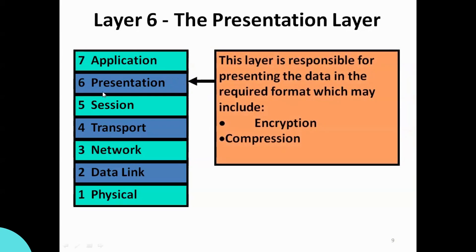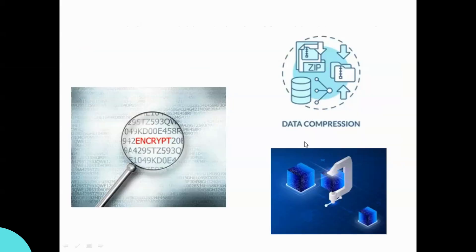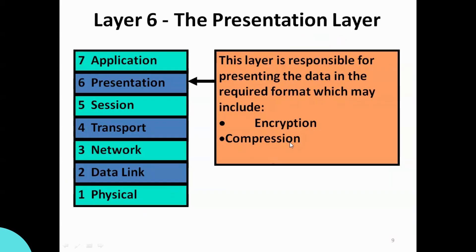Next is the Presentation layer. This layer handles encryption and compression of data. During encryption, content data is converted into an encrypted format that is not in readable form. The reverse process is decryption, which converts it back to a readable human language.